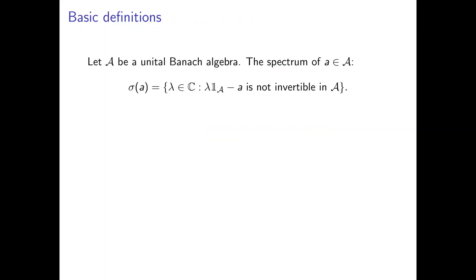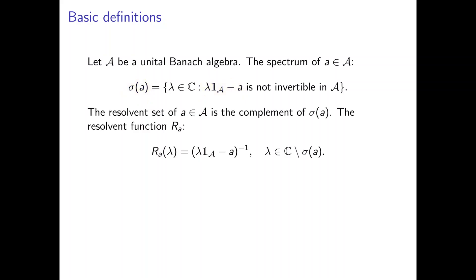First off, we have the basic definitions. So if we have a unital Banach Algebra A, then the spectrum of an element, which we denote by the sigma symbol of A, is equal to the set of all complex numbers lambda such that this particular element is not an invertible element in the Algebra A. And as a contrast to the spectrum, we define the resolvent set of A to be the complement of its spectrum.